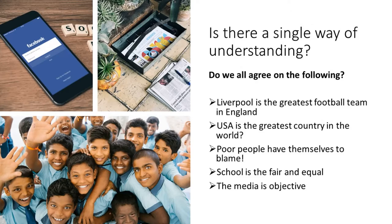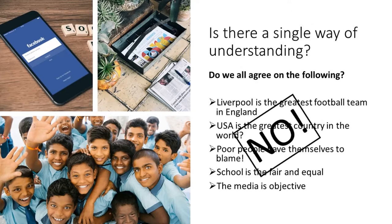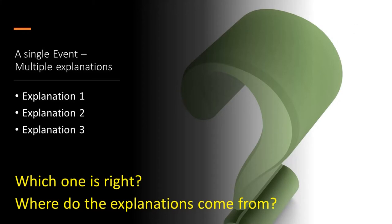Do we all agree on the following? That Liverpool is the greatest football team in England? That the USA is the greatest country in the world? That poor people have themselves to blame? Or that school is fair and equal? Or that the media is objective? Ask this question to the class and you will see how many different answers you get. Obviously the answers may be a big no, and therefore there is not a single way of understanding. We are aware that a lot of events take place every day, but for every single event there are multiple explanations.